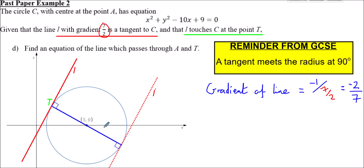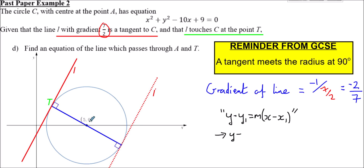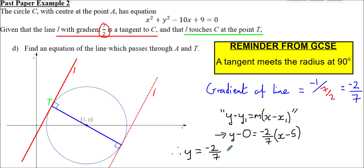This line has gradient -2/7 and passes through the center (5, 0). Using y - y₁ = m(x - x₁): y - 0 = -2/7 × (x - 5), so the equation of the line is y = -2/7(x - 5).